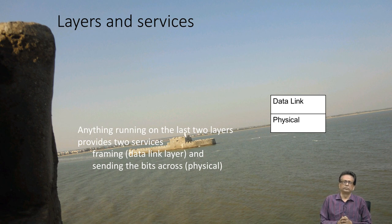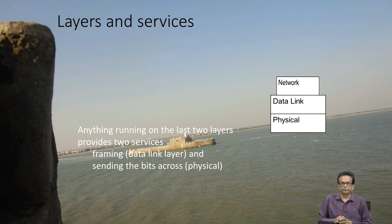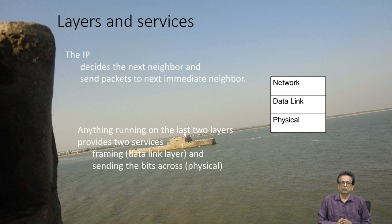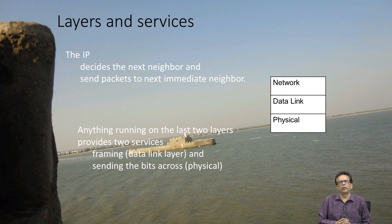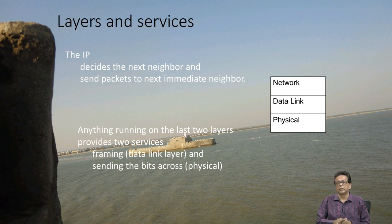The second service is called framing, and that is the job of the data link layer. The network layer decides the next immediate neighbor and sends packets to that next immediate neighbor. The first function is called routing — it decides who the next neighbor is for a given destination, and that is not very easy.